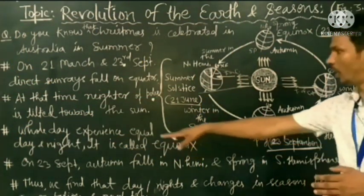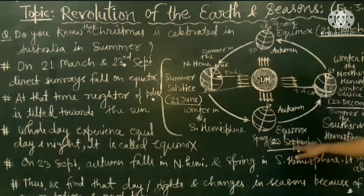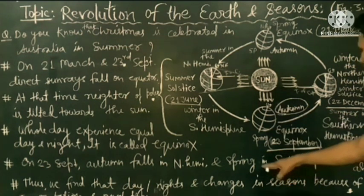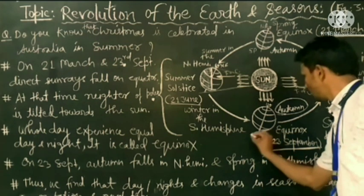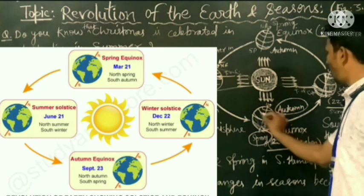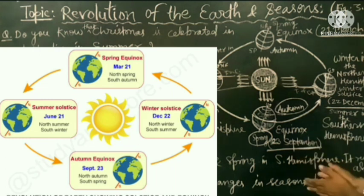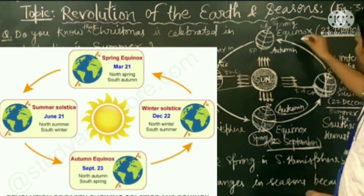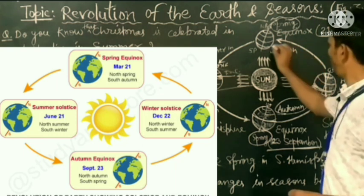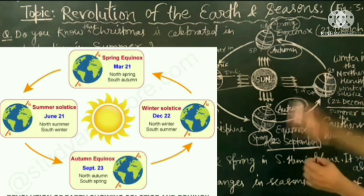On 23rd September, autumn falls in the northern hemisphere, while at the same time it is spring in the southern hemisphere. Similarly, on 21st March, it is spring in the northern hemisphere and autumn in the southern hemisphere. Both conditions are reversed — opposite between the two hemispheres.